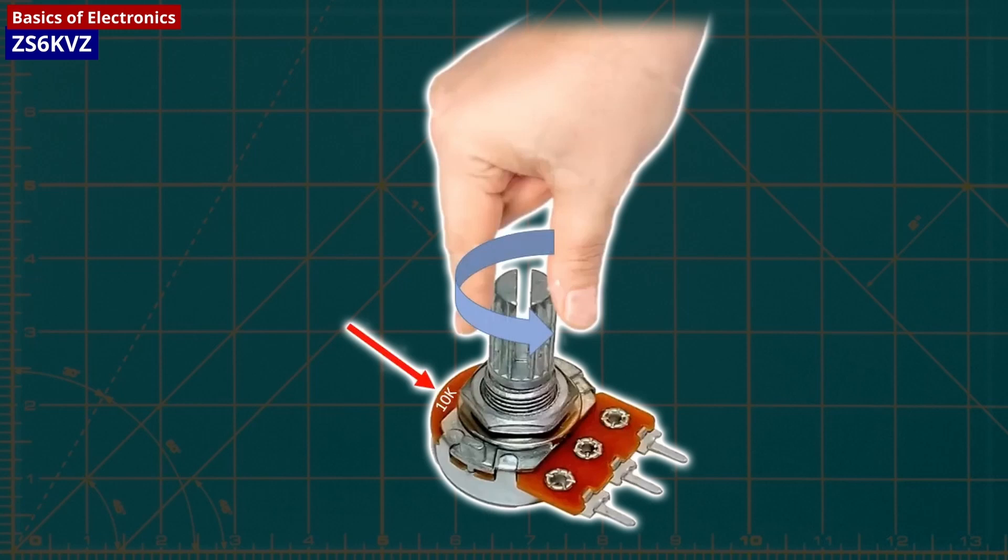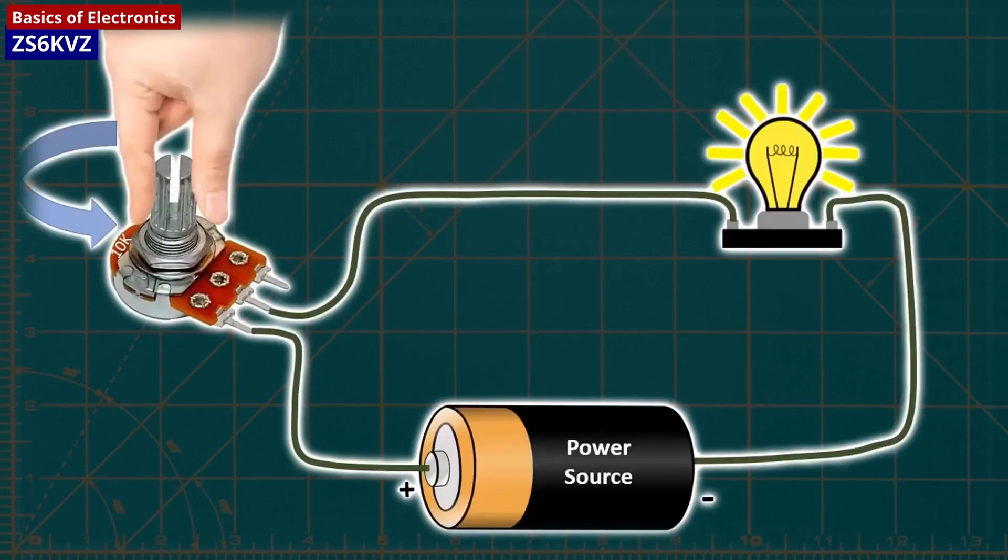Examples of potentiometers include the volume knob on a stereo and the sliding light dimmer. They are measured in ohms, and their value rating is indicated directly on them, rather than through color bands.